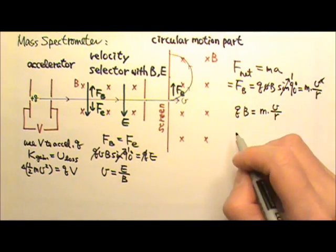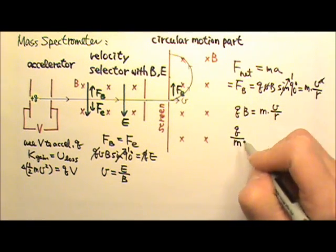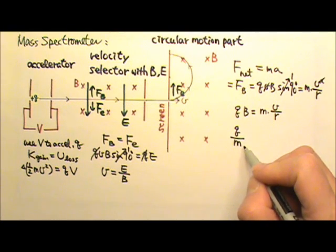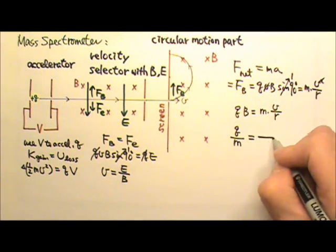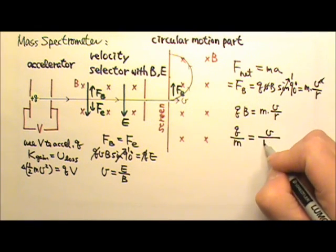And we can get q times B equals m times v over r. And usually we like to get this q over m, the charge to mass ratio. The q/m charge to mass ratio is v over rB.